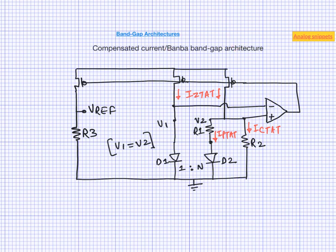This bandgap architecture is known as the compensated current bandgap architecture, or BANBA architecture — BANBA being the author of the famous paper that described it. We can now generate any reference voltage, removing one drawback of the conventional architecture. It also requires a lower supply voltage: the total supply requirement is the voltage across the diode plus the voltage across the pMOS transistor, which can be as low as 1 volt. The bias current spread is also considerably reduced — now only reflecting process variation of the resistors, which can be as low as ±20%.